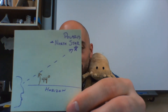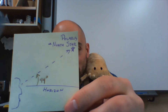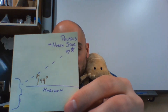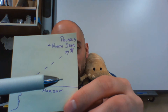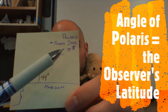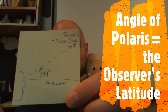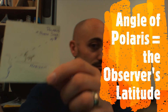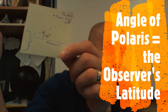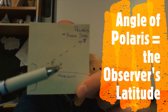Look at that person looking up at the North Star. So that is the angle of Polaris. In our diagram here, this is the horizon, that's the ground. How far up you look is the angle of Polaris. The angle of Polaris equals your latitude.